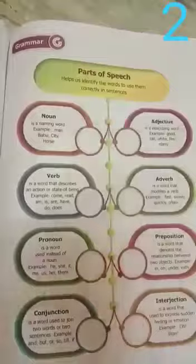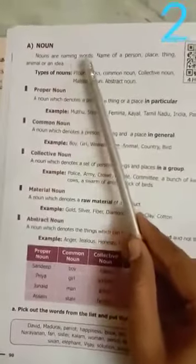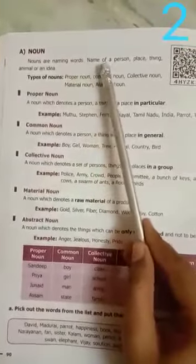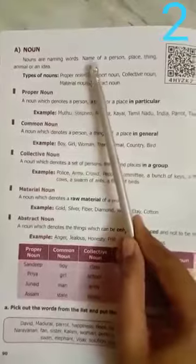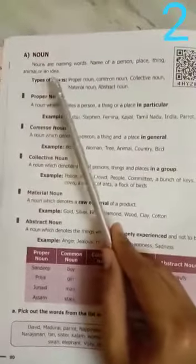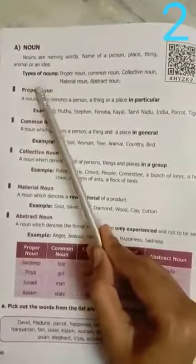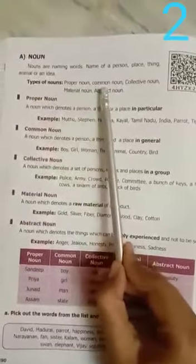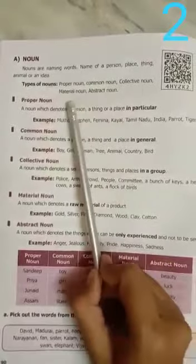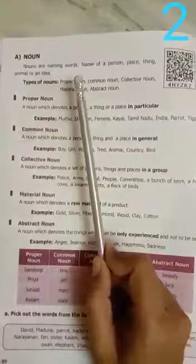Here are the definition and different types of noun. Nouns are naming words — the name of a person, place, thing, animal, or an idea. The types of nouns are: proper noun, common noun, collective noun, material noun, and abstract noun.